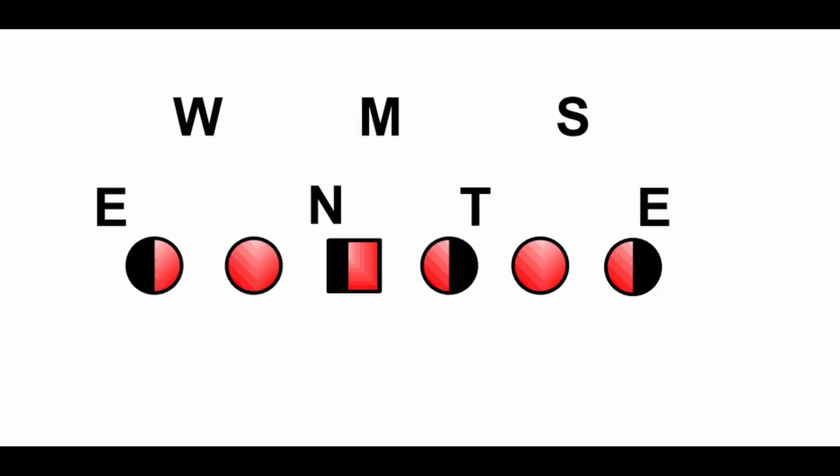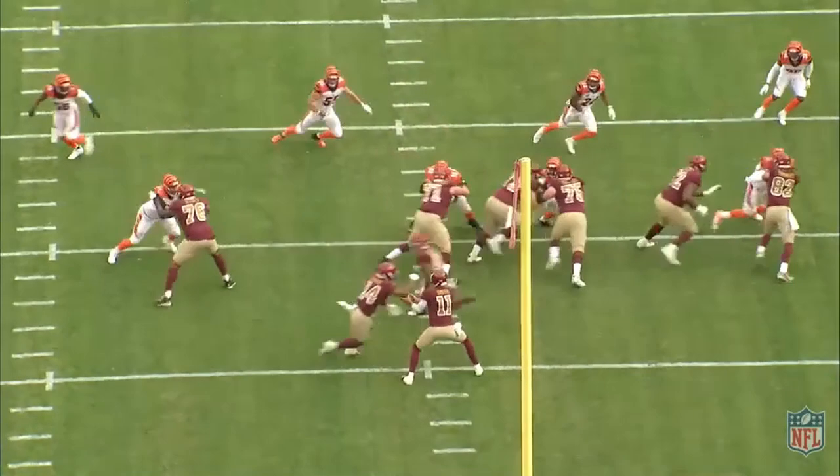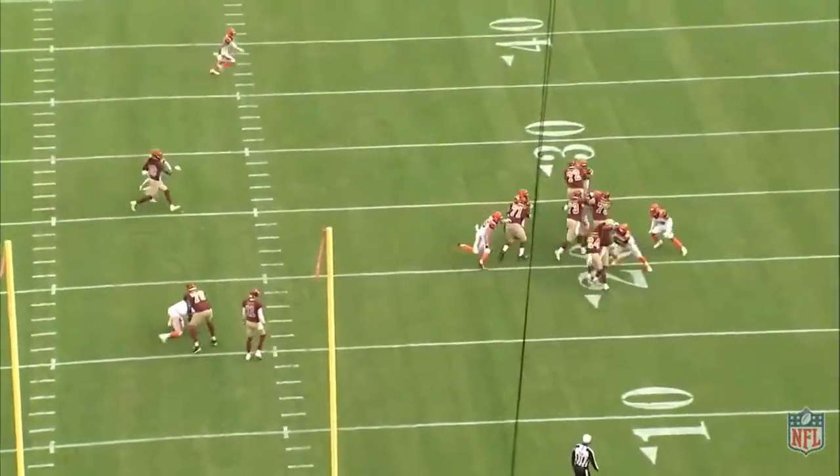The 4-3-over matches strength with strength by shifting its defensive alignment. That alignment occupies more blockers at the point of attack if the offense runs strong. The 4-3-over also allows the Mike linebacker to scrape more easily and fill gaps since the offensive linemen over him are occupied by defensive linemen. By alignment, the 4-3-over is attempting to stop strong side runs.